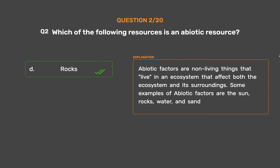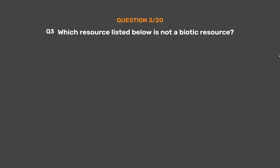Abiotic factors are non-living things that exist in an ecosystem and affect both the ecosystem and its surroundings. Some examples of abiotic factors are the sun, rocks, water, and sand. The correct answer is Option D: Rocks.